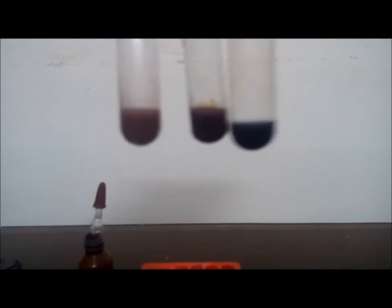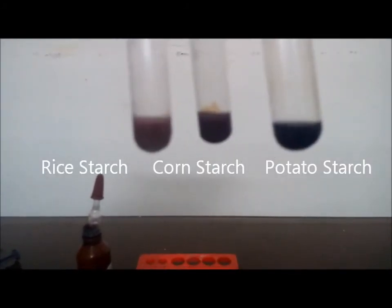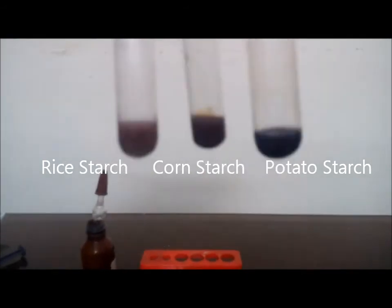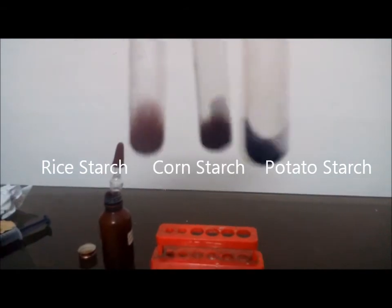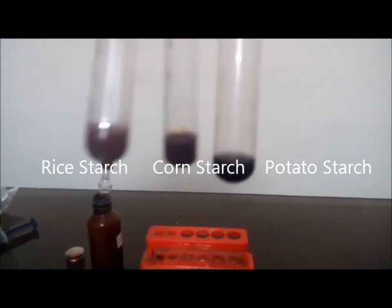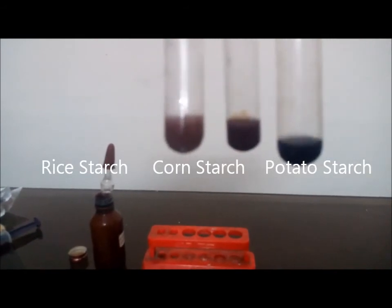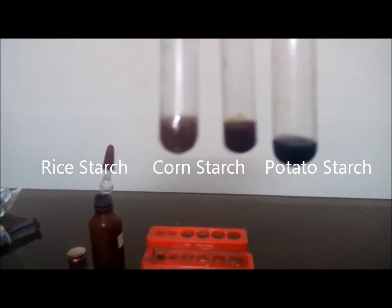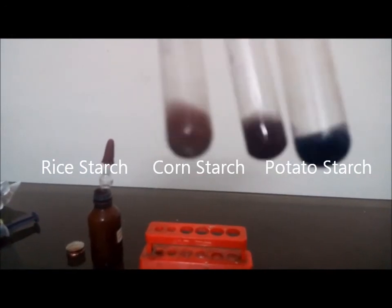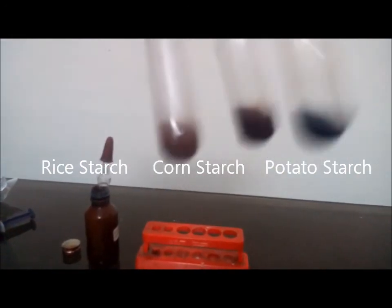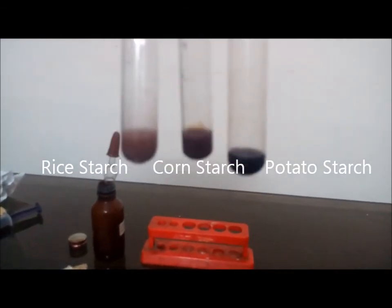Now you can see the color of the three solutions. You can see in the leftmost one, the rice starch sample is the lightest - it is light violet color. Then the middle one, corn starch, is a dark brinjal purple color. And then towards the right, the potato starch is completely blue-black color. So a very clear-cut observation I can make from this.